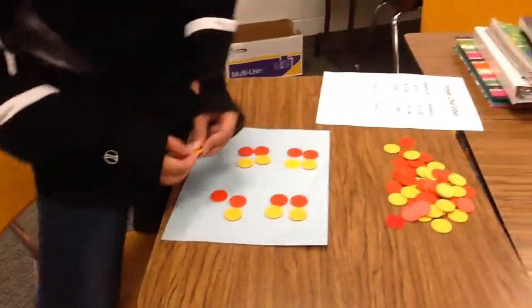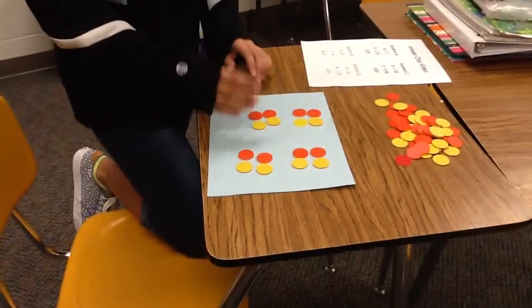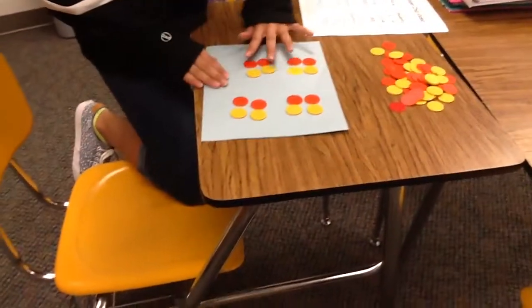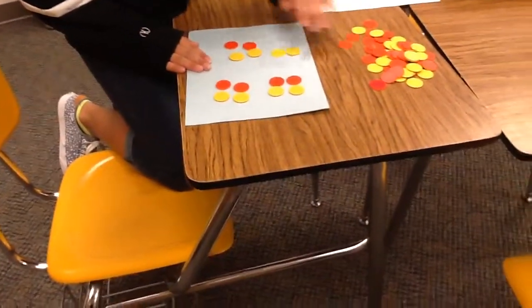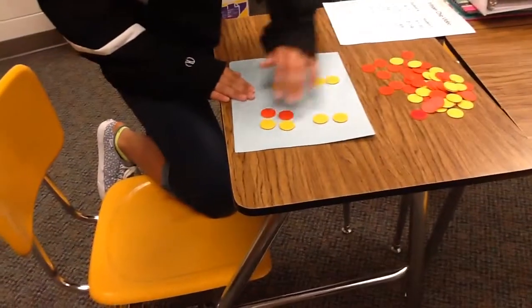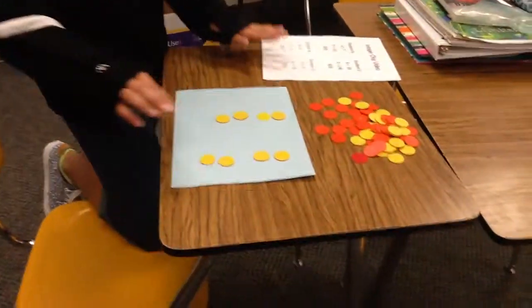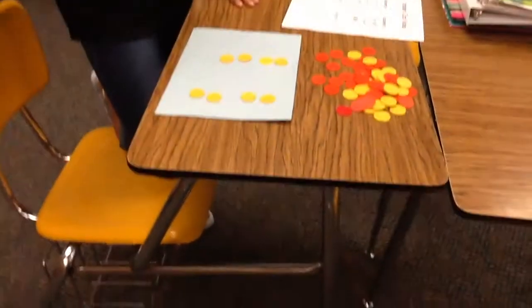Okay, so then you take away four groups of negative 2. So you take away one group, two groups, three groups, four groups, and that leaves you with positive 8.